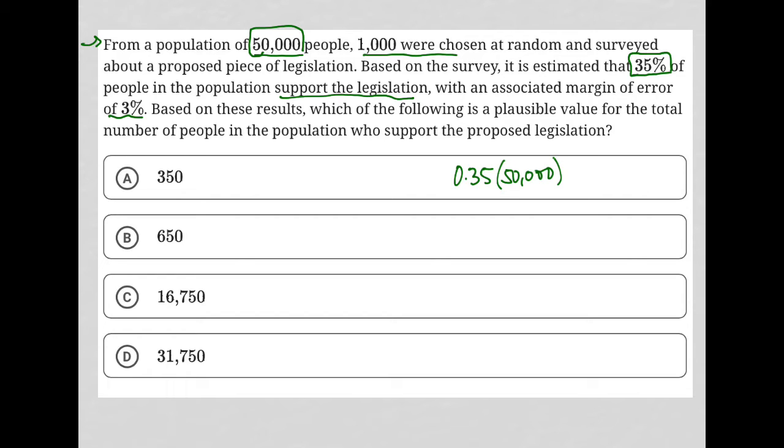And you have a calculator that you can use for the digital SAT. You can also bring your own calculator, so it shouldn't be a problem to do this. And that value is 17,500. So we would expect 17,500 people to support this legislation.